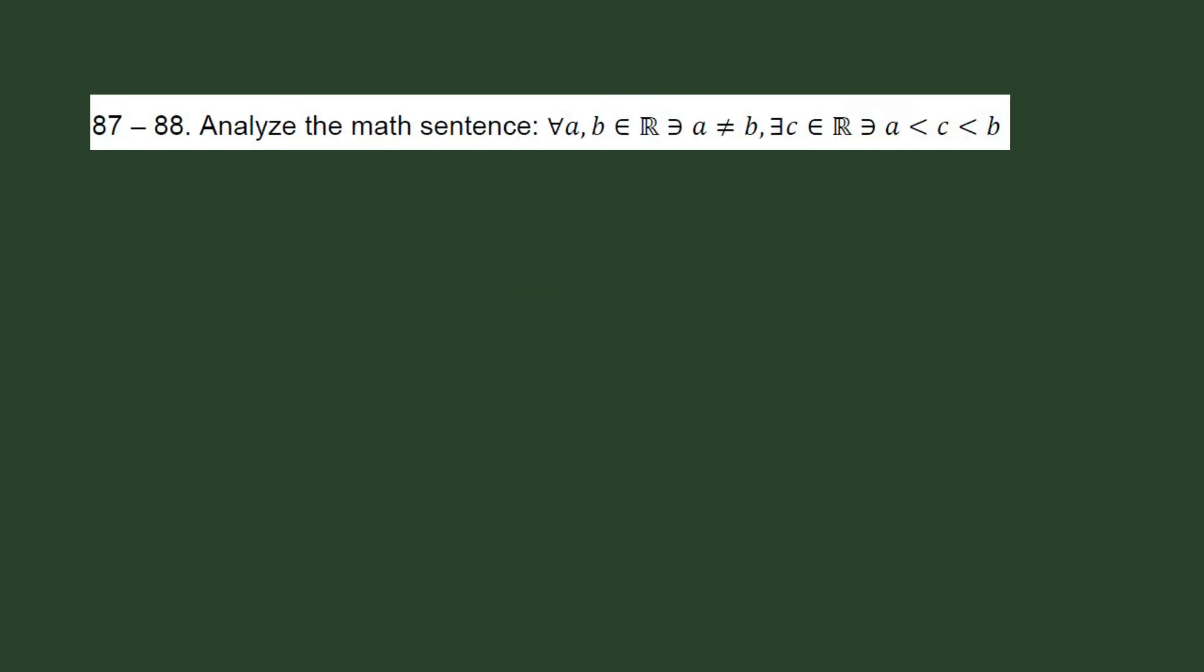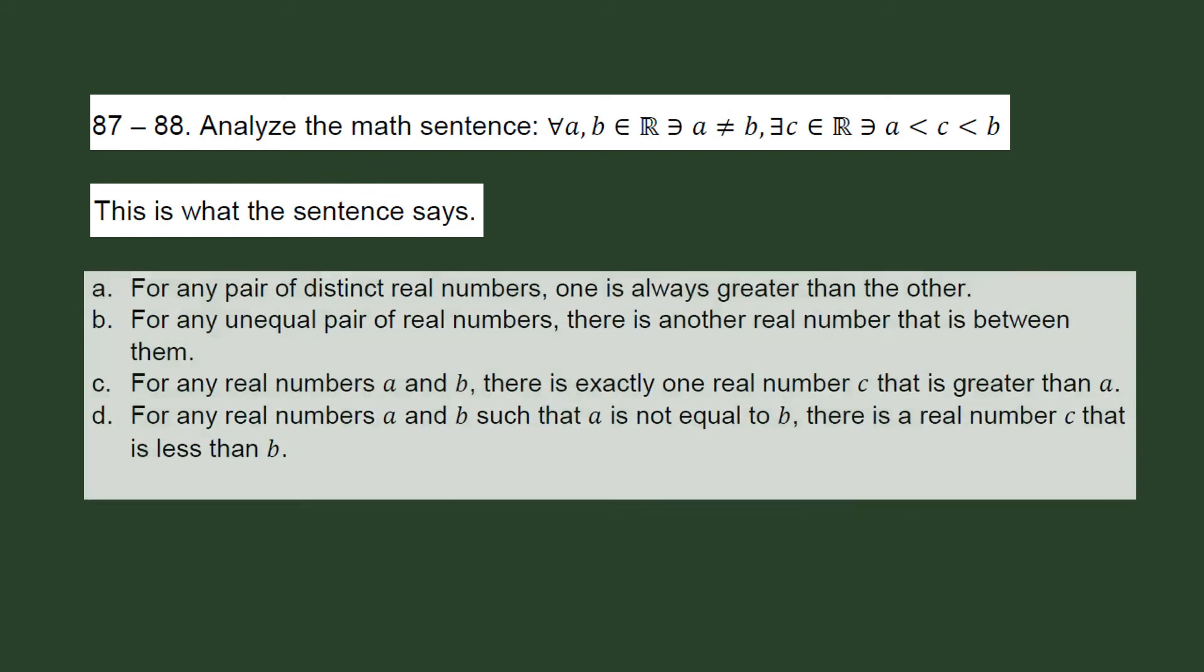Analyze this sentence. So what do you think? What does it say? Okay, let's check letter A. For any pair of distinct real numbers, one is always greater than the other. Well, it doesn't look like it's the answer for this one because there is a real number C here.